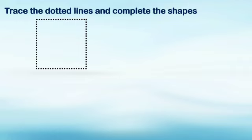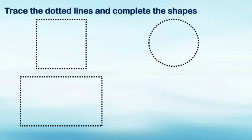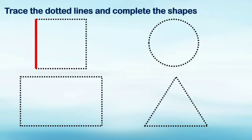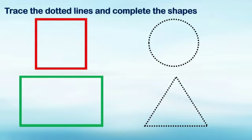Our next heading is: trace the dotted lines and complete the shapes. Kids, can you see the dotted lines here? You have to complete the shapes — square, rectangle, circle, and triangle. Now let's trace: one, two, three, and four. We have already traced the dotted lines and this shape is known as square. Now let's do another one: one, two, three, and four. Can you tell me which shape you have traced? This is rectangle.